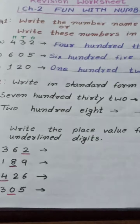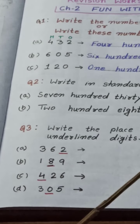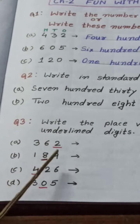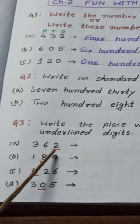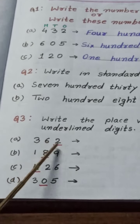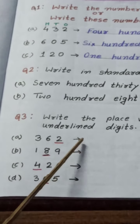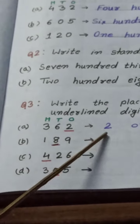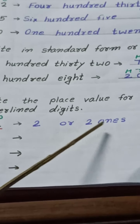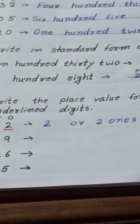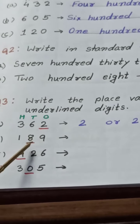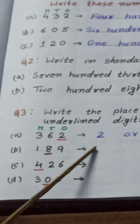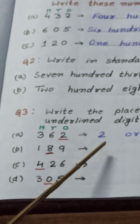Let's see question number 3: write the place value for the underlined digit. Here is given 362. Children, can you tell me — 2 is standing on which place? Yes, it is on the ones place. We will write here the answer as 2, or we can say 2 ones. You can write the answer in 2 ways. Now 189 — we have to find the place value of 8. Easily you can say 8 is at the tens place, so we write 80.